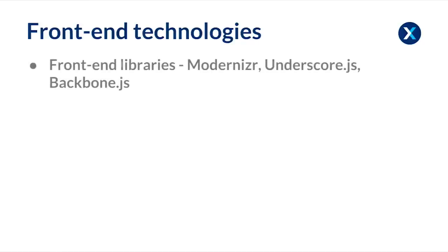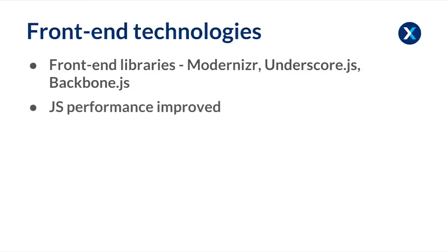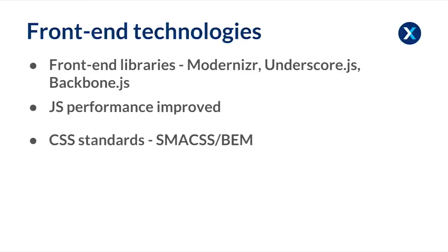There's also been a few front-end technologies introduced into Drupal 8, things like Modernizr, Underscore.js and Backbone.js, which is used for Drupal 8's mobile experience and content authoring. JS performance has been improved — a lot of jQuery has actually been rewritten in JavaScript to improve performance. Currently in Drupal 7, jQuery loads on all pages, whereas in Drupal 8 you have to specify which pages you want jQuery to load, and jQuery now loads in the footer as opposed to the header.